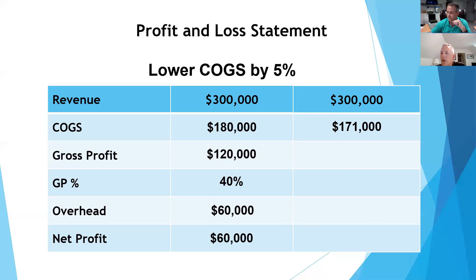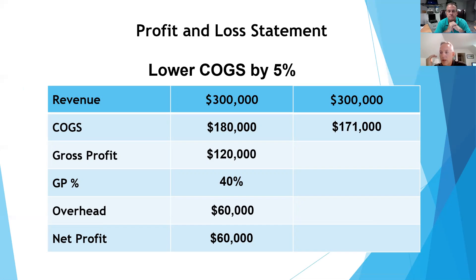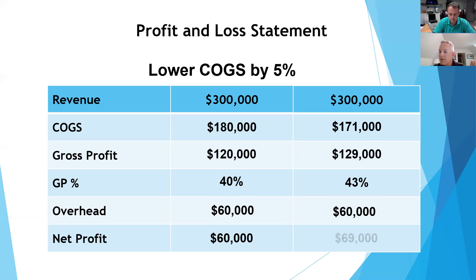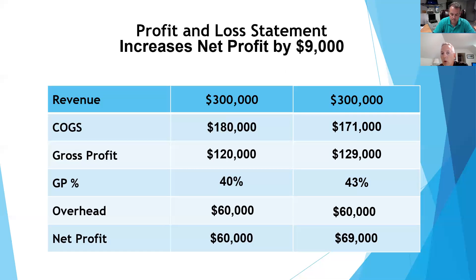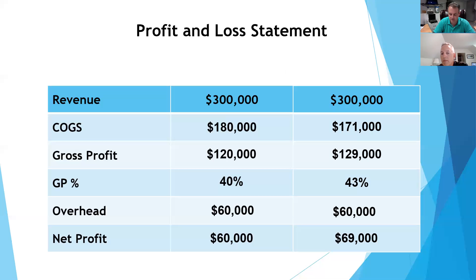Two years ago when oil and gas prices were high you could charge an extra fee for shipping; now it's the complete opposite — you're making more money because shipping is less expensive with lower fuel costs. So if we just lower cost of goods sold by 5% without changing revenue, a 5% decrease in variable costs made an extra $9,000 in this example — that's a 15% increase in profit.